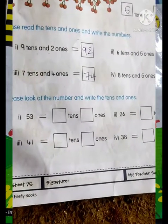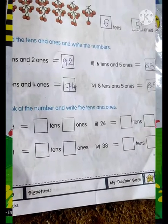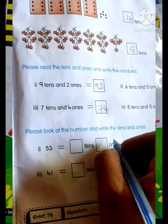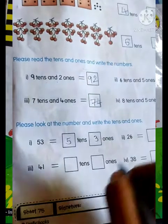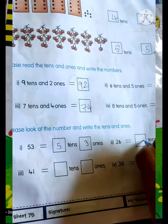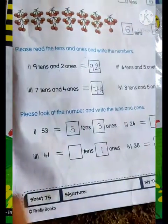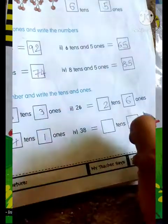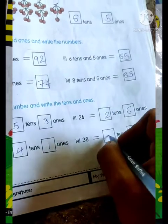Next is please look at the numbers and write the tens and ones. So first is 53, that's 5 tens and 3 ones. Next is 26, that's 2 tens and 6 ones. Next is 14, 1 ten and 4 ones. Next is 38, that's 3 tens and 8 ones.